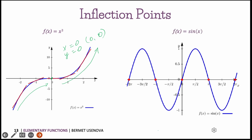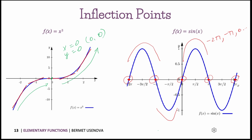Another example is the sine function, shown as the blue graph. The inflection points of sine of x are the red dots, which coincide with the roots of the sine function — at minus 2π, minus π, 0, and so on. At each of these points, the function transitions from concave down to concave up, or vice versa. This is the basic idea of inflection points.